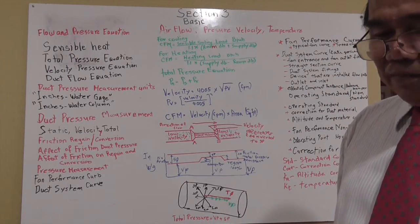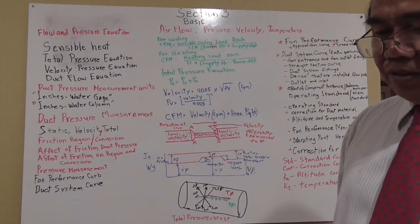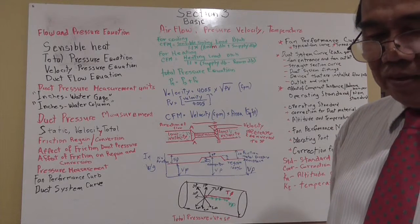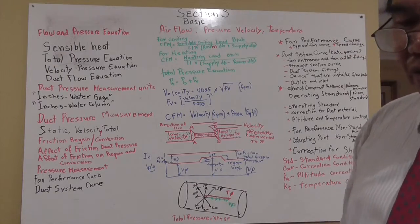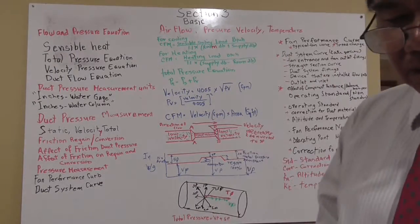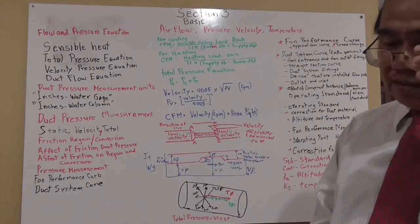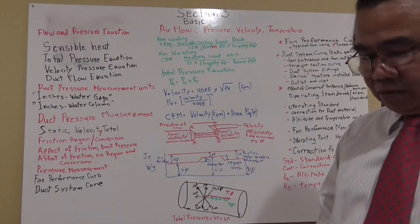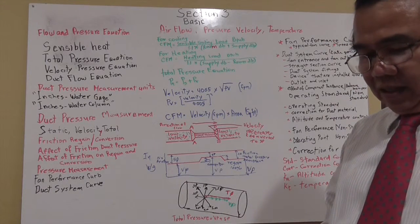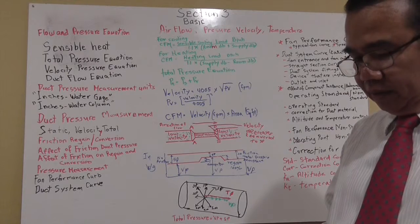When speed is increased, the fan will produce more pressure at a given CFM, or it will deliver more air at a given pressure. When the speed is decreased, the fan will produce less pressure at a given CFM, or it will deliver less air at a given pressure.